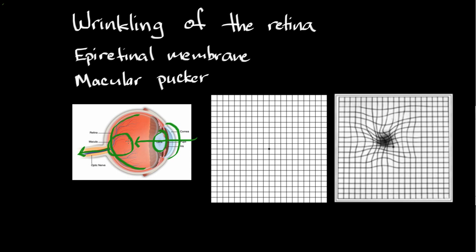And it occurs when some basically scar tissue forms on the surface of the macula, causing the macula to be wrinkled.